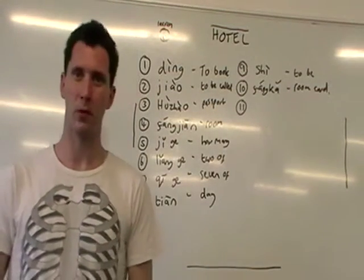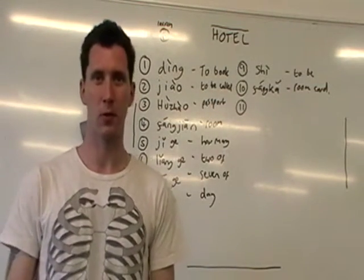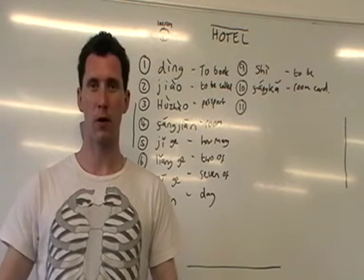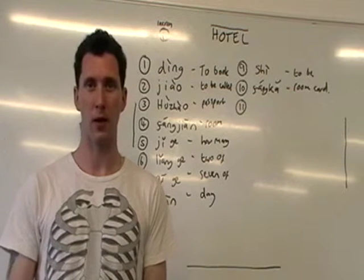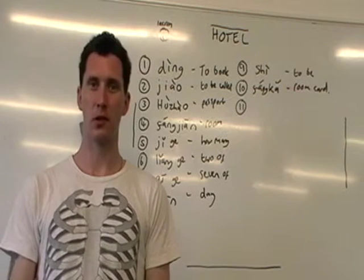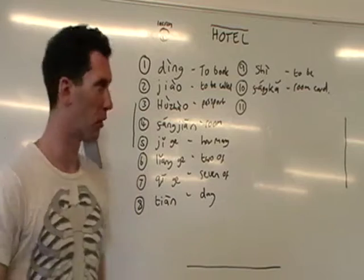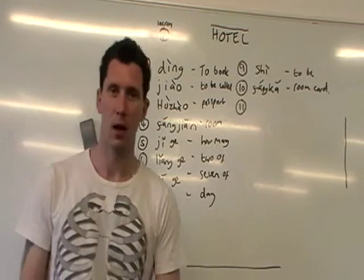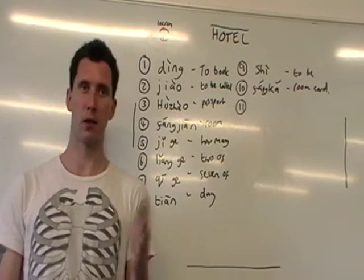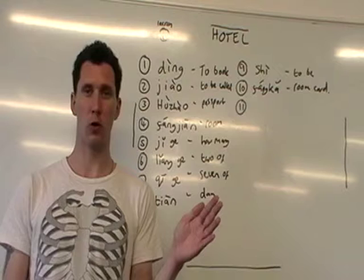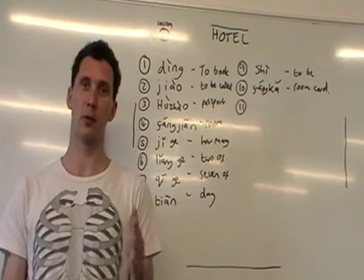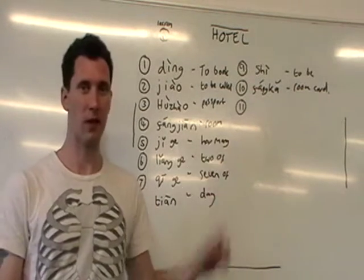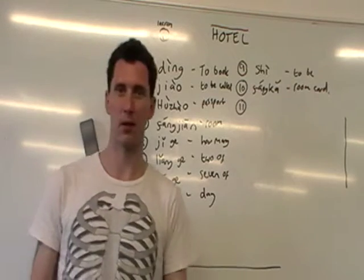Hi, my name is Robert Morell. I'm doing vision lessons for the website graspchinese.com. You can follow along on the website or you can use these videos as standalone. We're on to lesson number six: arriving at the hotel. Lesson number four was arriving at the airport, lesson number five was getting a taxi to the hotel, and this is actually arriving at the hotel.